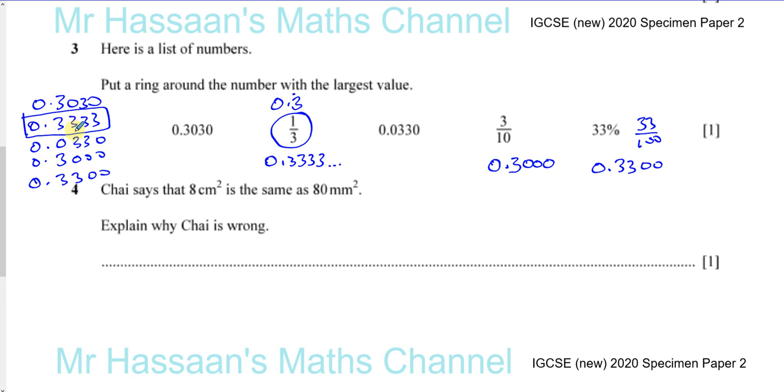Okay, because it has 3/10, 3/100, 3/1000, and 3/10000. Whereas these have got less in some of those particular spaces. So that's the biggest value there.